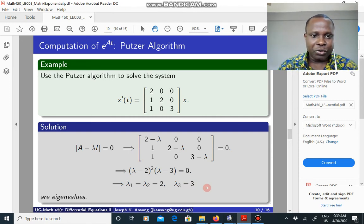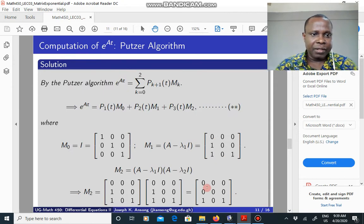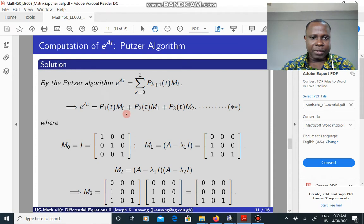The formula for computing the matrix exponential by the Putzer algorithm is given by this. It's running from 0 to 2. So if you expand this you get P1 times M0 plus P2 times M1 plus P3 times M2. So what you do once again is calculate what your M's are: M0, M1, M2. Find what your P's are: P1, P2, P3. Plug them in here, group your terms and that gives you the matrix exponential.